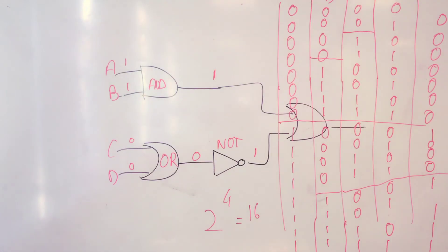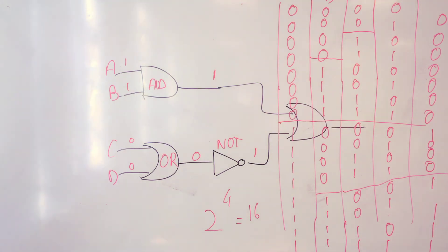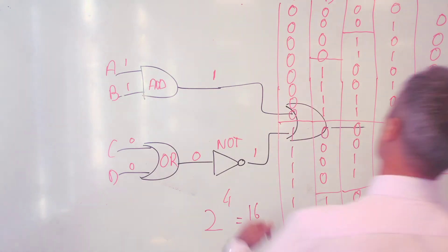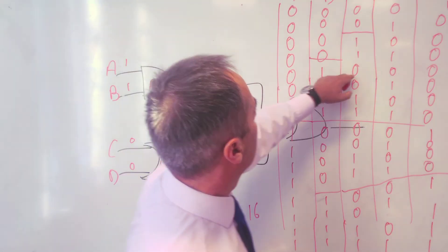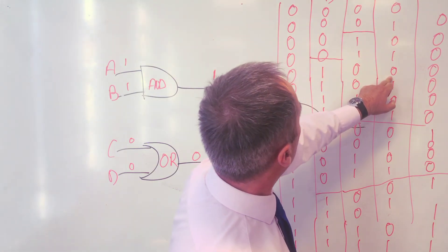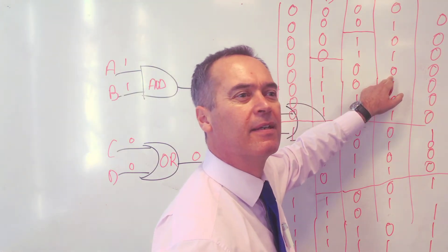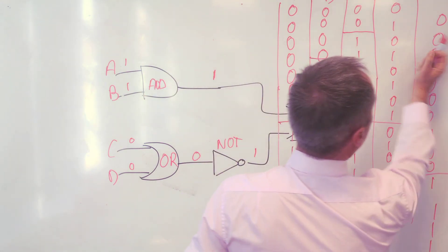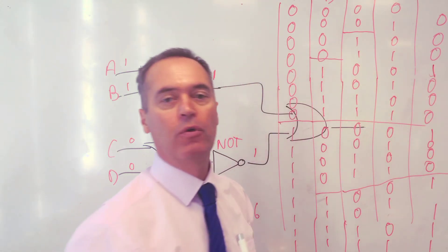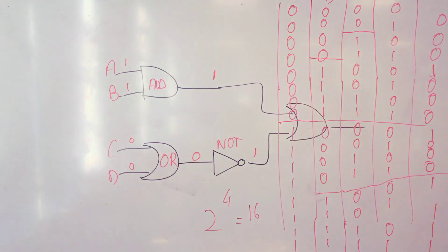A student asks about line five — one, zero, one, zero — is the output also a one? Yes, I missed that one. Thanks very much. That's also a one. All right, I'm going to stop this one and then we'll do another example.